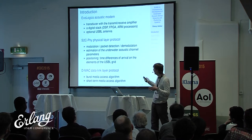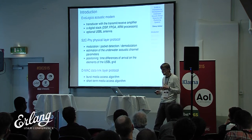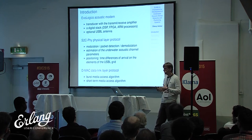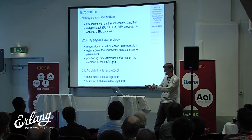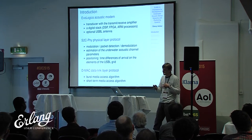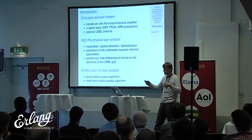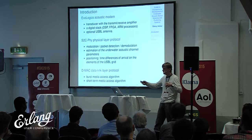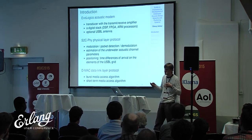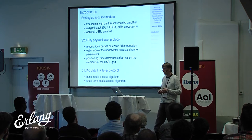On the physical layer we solve more or less classical tasks: modulation, packet detection, and demodulation. We also need to estimate the multipath and the changing multipath structure in the channel in order to adapt to it, and we do estimation of time differences of arrivals on the ultra-short baseline antenna grid. On the data link layer we have two approaches combined in one protocol: one optimized for data transmission point-to-point between two modems, finding the best optimal bit rate; and a short-term media access algorithm for instant messages, which is good for networking where we just choose parameters that are well enough in most cases — and this is also good for positioning.